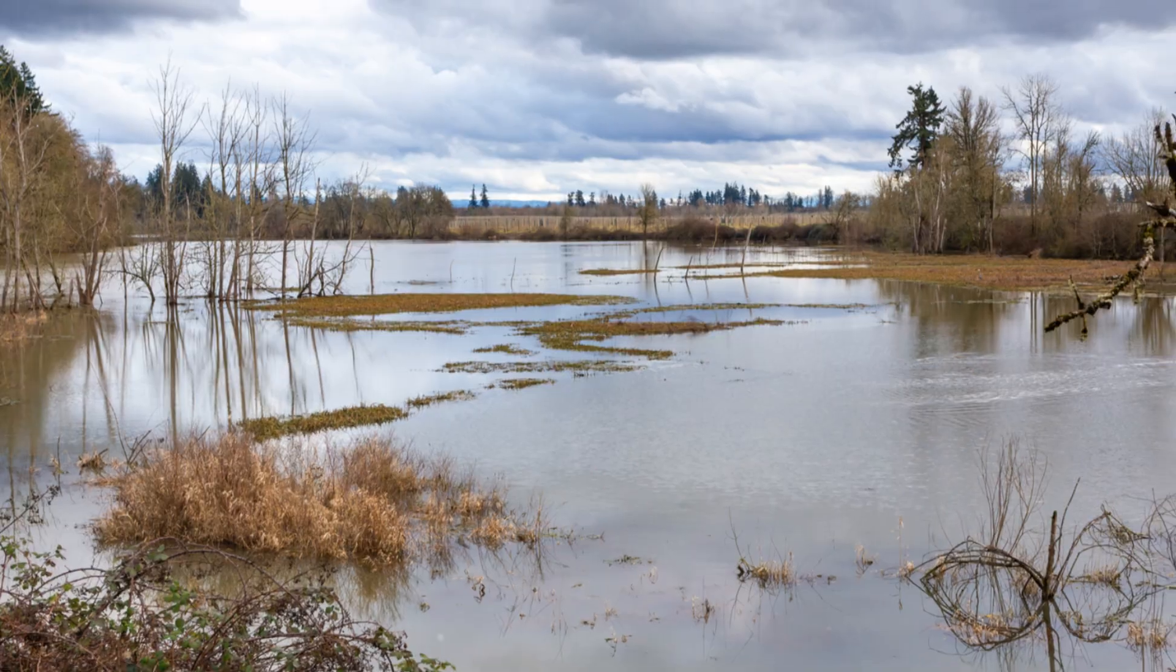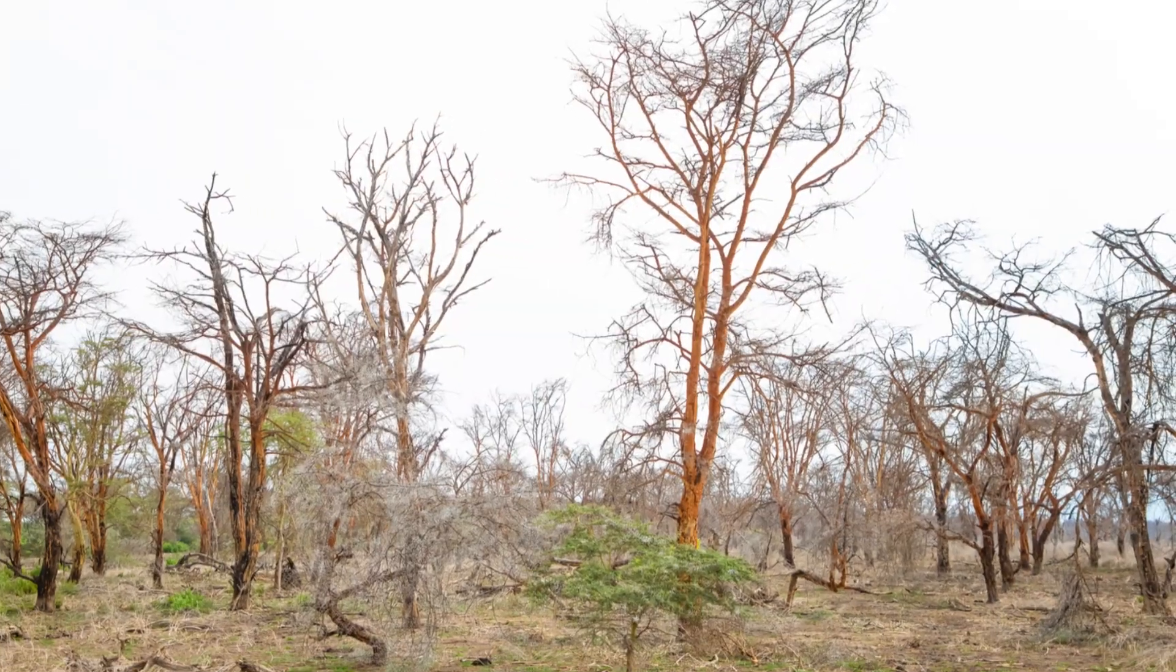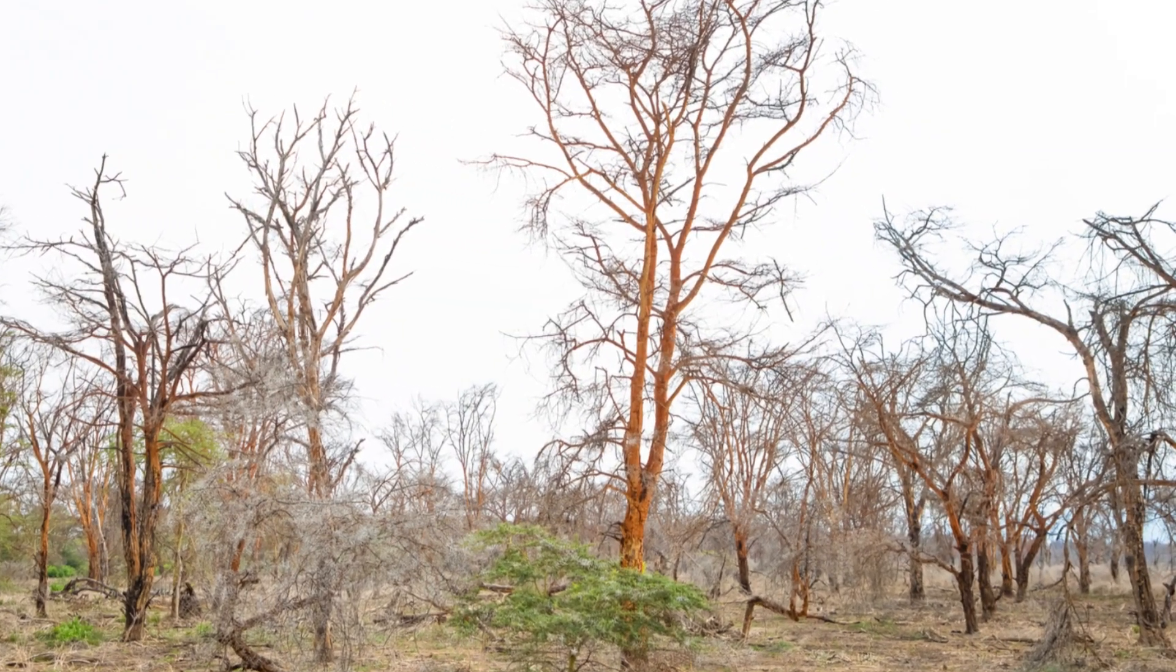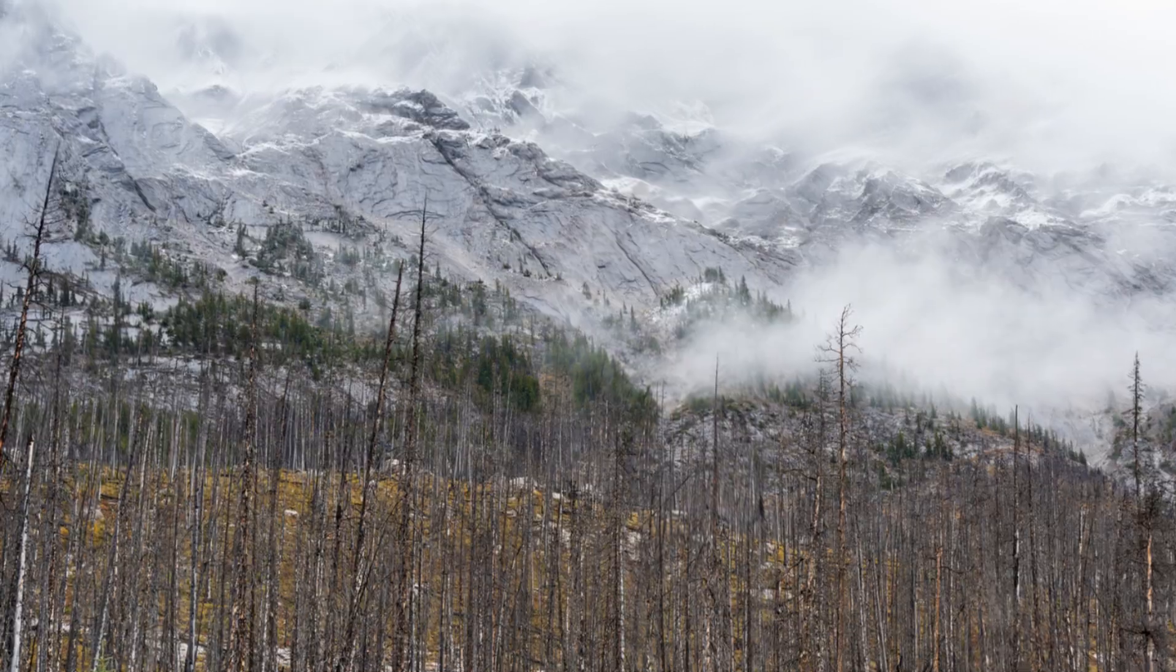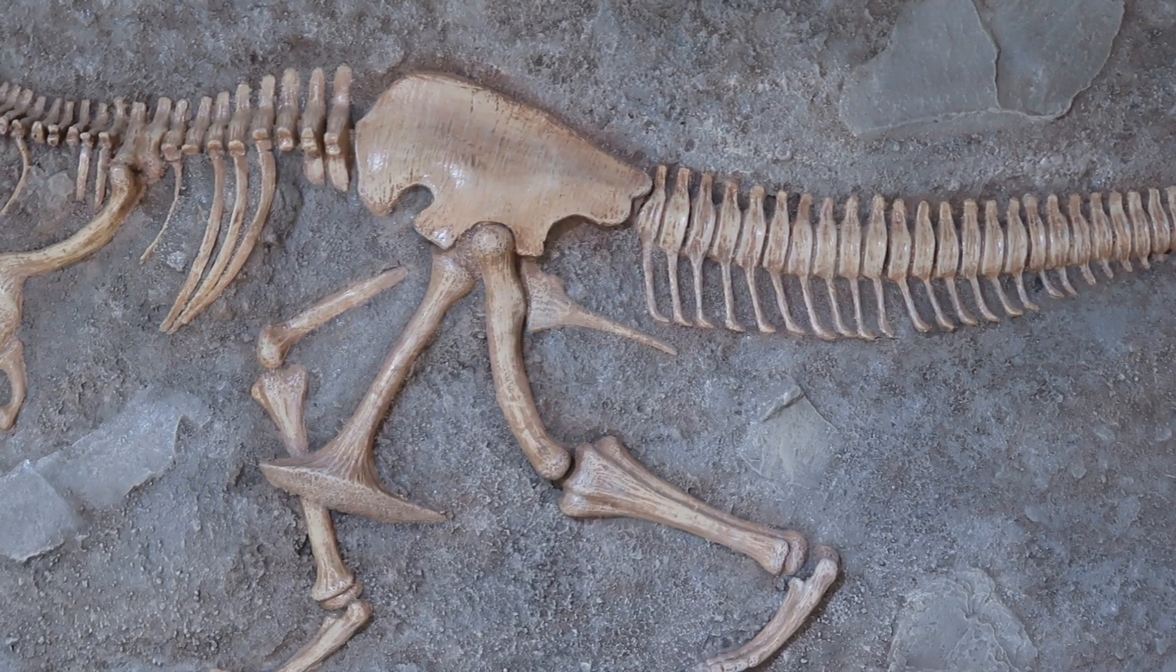The skies darkened, the sun's light blocked out for months, perhaps years. Temperatures plummeted, plants withered and died, and the food chain collapsed. The dinosaurs, along with countless other species, were doomed.